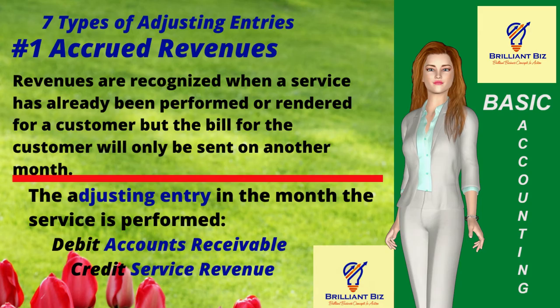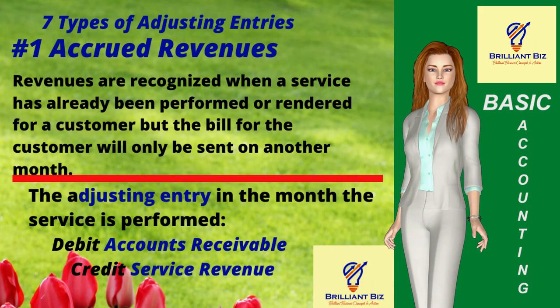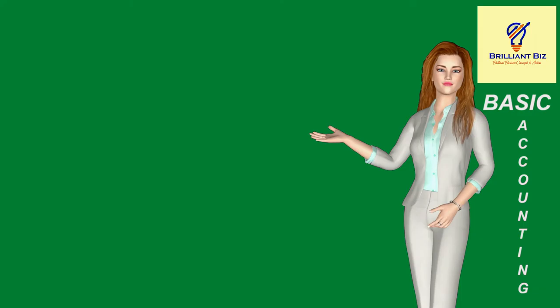One: accrued revenues. Under this type, revenues are recognized when a service has already been performed or rendered for a customer but payment is not yet received. The adjusting entry in the month the service is performed is debit accounts receivable and credit service revenue.